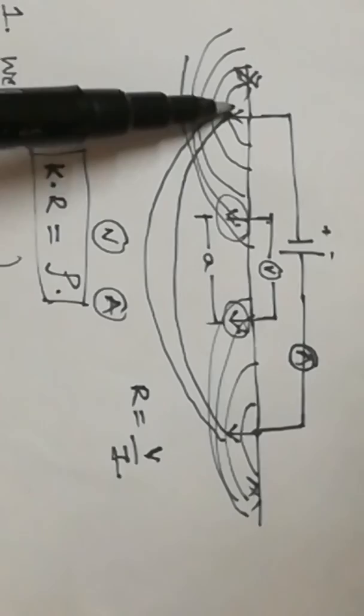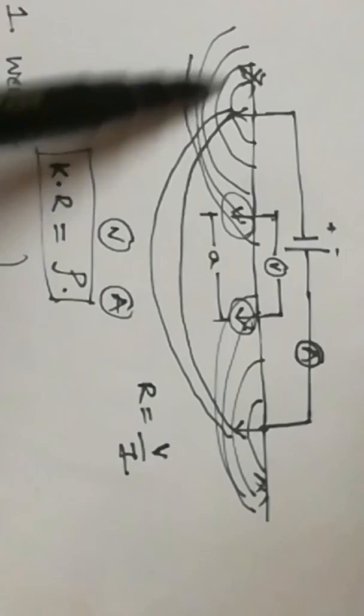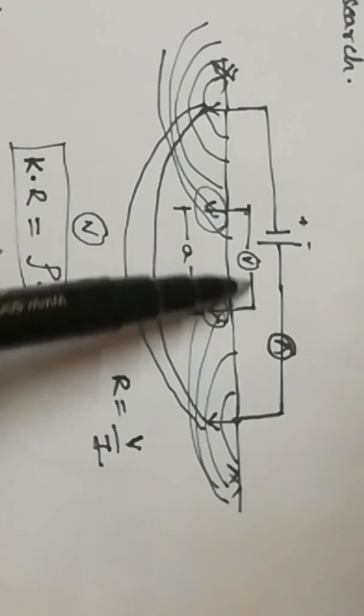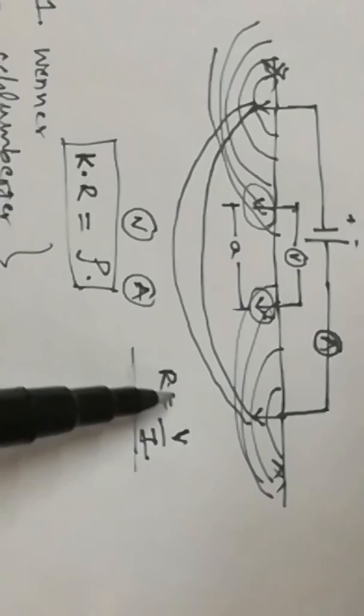When we pass current in the outer two electrodes, the current waves pass from one electrode to the other. Due to these current sources, equipotential lines are generated, and there is a generation of potential difference in the inner two electrodes. So from the inner two electrodes we get voltage, and from the outer two electrodes we get current. From Ohm's law, R equals V divided by I, giving us the resistance offered by the soil.